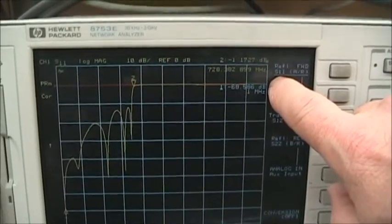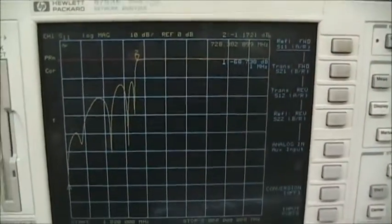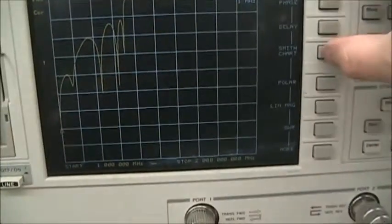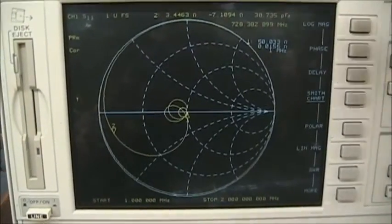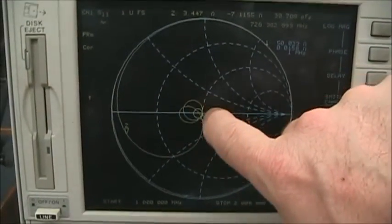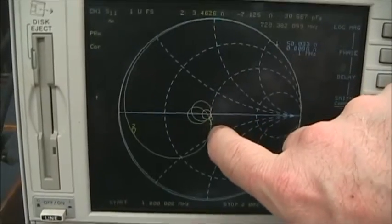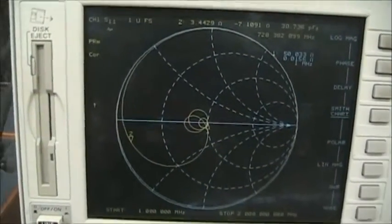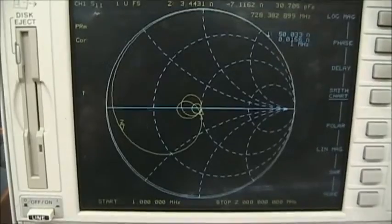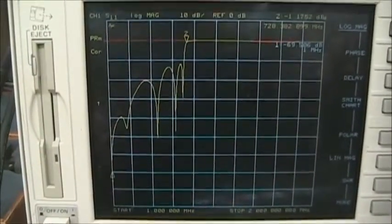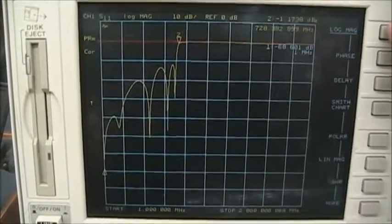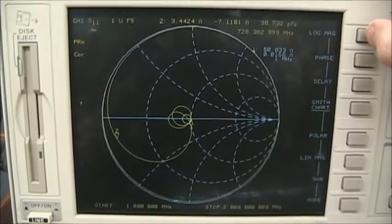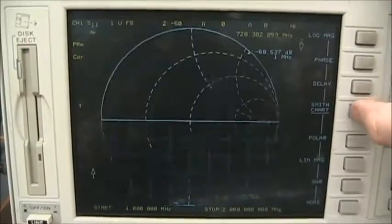We could look at this S11 in terms of a Smith chart display, although it'll be a little messy for us to see. But we see in the center part there's the matched area, or the low frequencies. And then eventually, the response goes towards an open or pure capacitive inductive, which is a reflected component. We'll switch back to log magnitude. For input reflection or the S11, either the log magnitude or the Smith chart displays are appropriate. It just depends whether you want to think in terms of return loss or in terms of impedance.